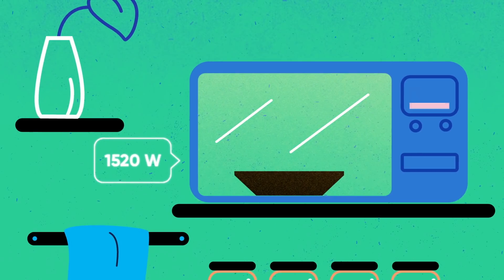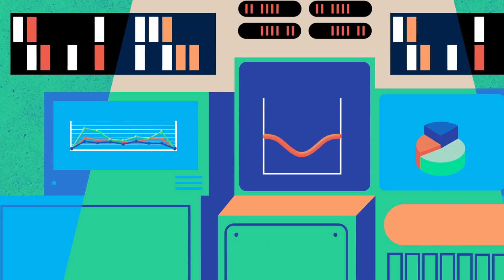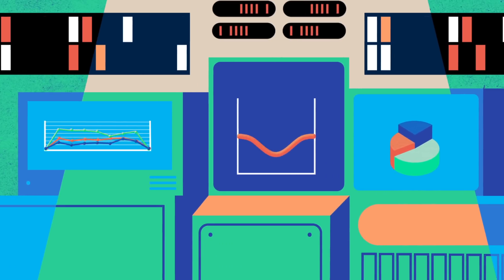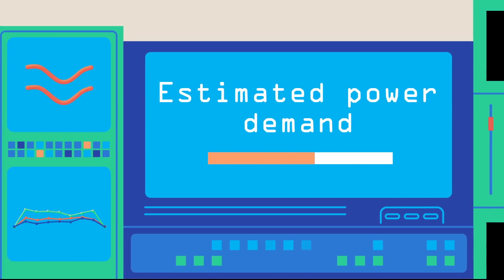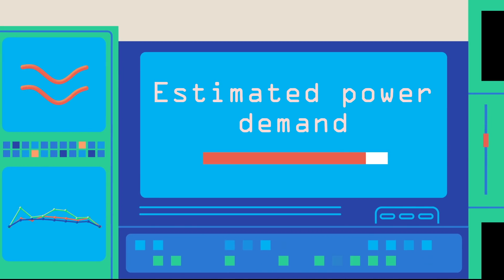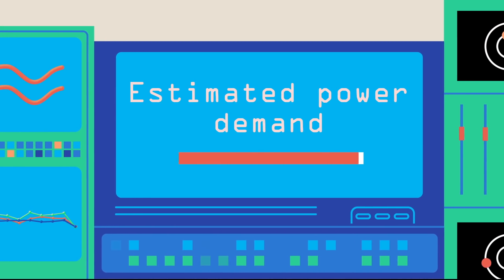There are systems to predict energy needs. Adding the energy consumption of all households, businesses and industries allows for estimating how much electricity will be needed. This is called aggregate electricity demand.